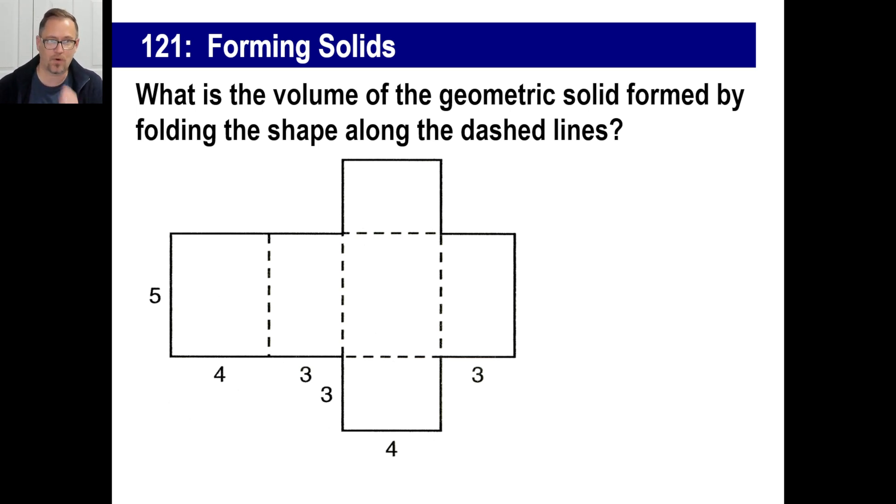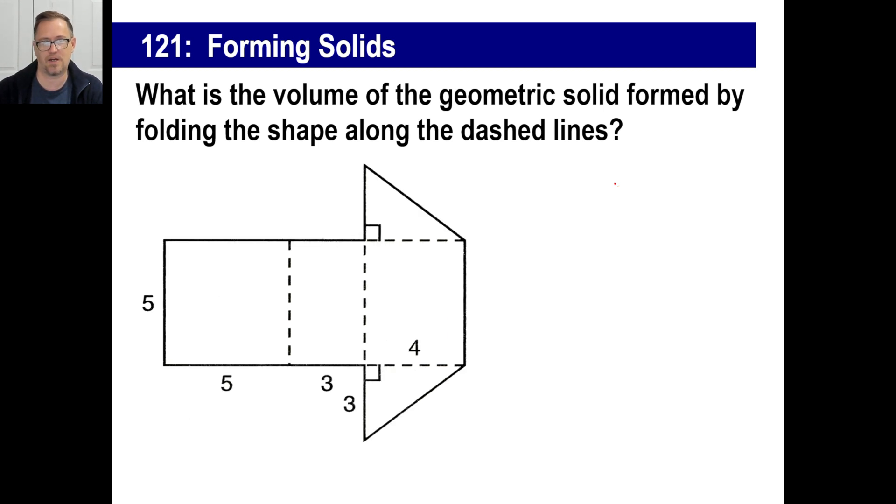What's the volume of the geometric solid formed by folding the shape along the dashed lines? Now, what you see is, and you can actually see a picture of this as well, but this is what this figure looks like if you were to fold it up. The volume of a shape is basically the area of a base times the height, or length times width times height. So it's going to be three times four times five, which is 60. So that's the volume of that one.